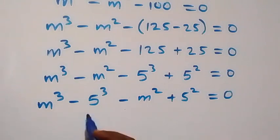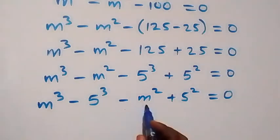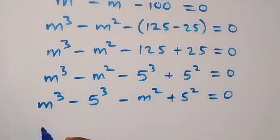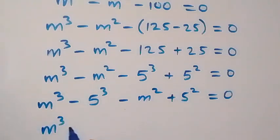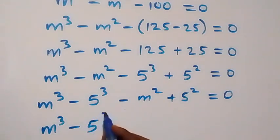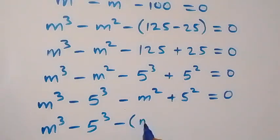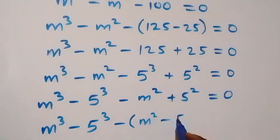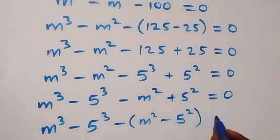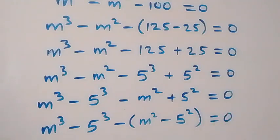From what we have here, we can factor out a minus, so this becomes m raised to power 3 minus 5 raised to power 3, then minus open bracket m squared minus 5 squared, close bracket, equals zero.